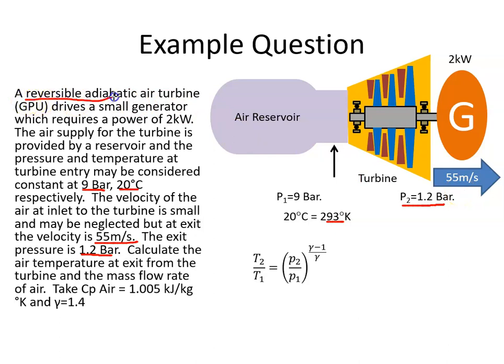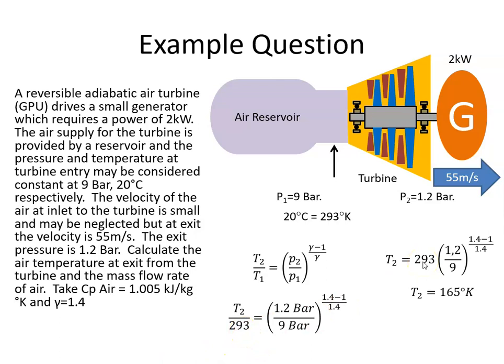So it's a reversible adiabatic process, so we can use this equation. So when we plug in the values then, the units cancel out and we multiply both sides by 293 and when I do that I get 165 degrees Kelvin.